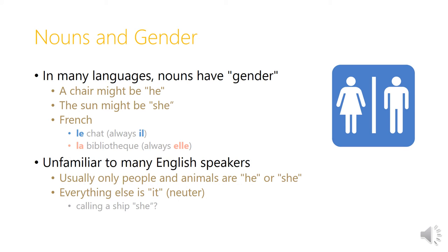Nouns and other nominals also have gender. In many languages, nouns have gender in a way that they don't in English. So a chair might be 'he,' or the sun might be, as it is in German, 'she.' If you've learned French or Spanish, this will be familiar to you from those languages. In French, for example, we have 'le chat,' which is always 'le,' always masculine, always referred to by 'il.' On the other hand, we have 'la bibliothèque,' which is always feminine. This is unfamiliar to many English speakers. Usually in English, only people and animals are referred to as he or she, and everything else is 'it' — in other words, neuter in gender. But we do, in a few cases, use he or she for inanimate objects, as when we refer to a ship as 'she.'